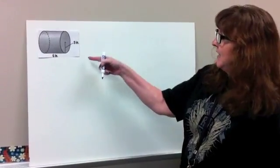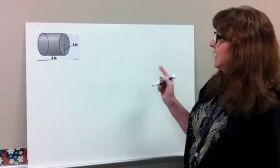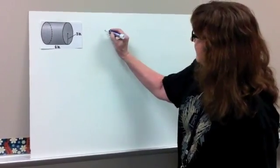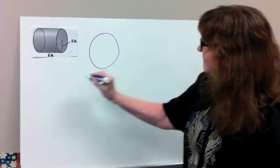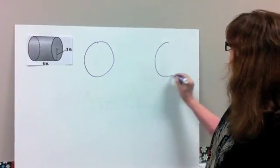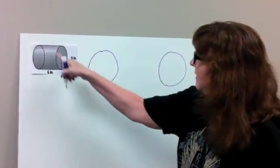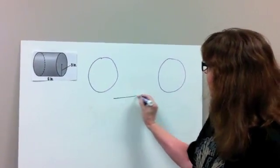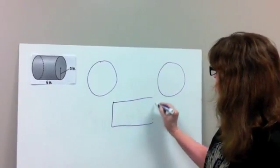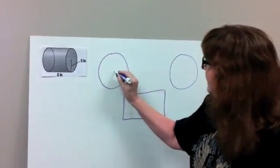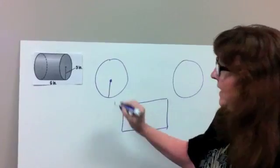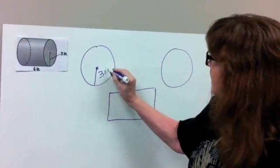This is our first example. This is a cylinder. As you can see, the cylinder is made up of basically two circles. And then in the middle here, it has a rectangle. So basically these two circles, you've got a radius of 3 inches for each one.